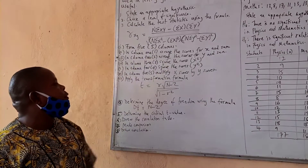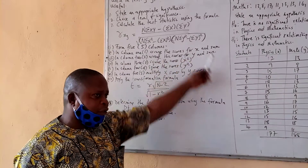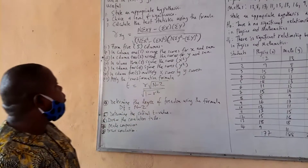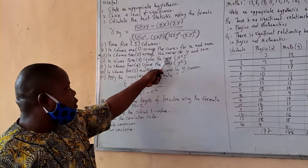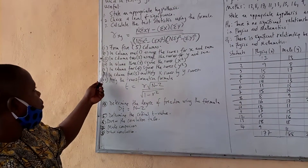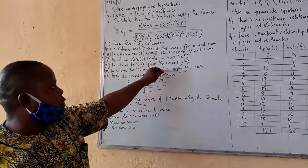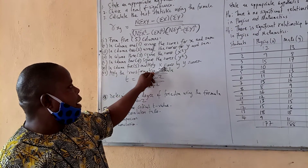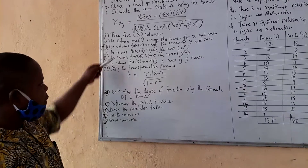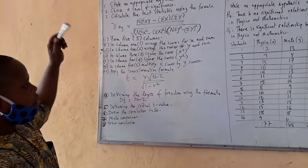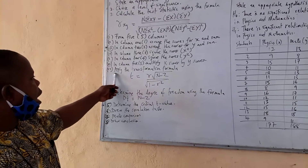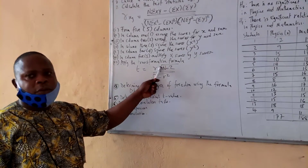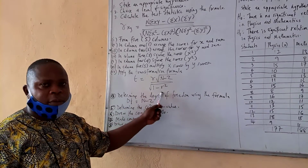When applying this formula, there are sub-steps to follow. Number one: form five columns. In column one, arrange the scores for X and sum them. In column two, arrange the scores for Y and sum them. In column three, square the scores for X. In column four, square the scores for Y. In column five, multiply X scores by Y scores. Once you have determined the correlation coefficient, apply the t-transformation formula: t equals r times the square root of n minus 2, all over the square root of 1 minus r squared.